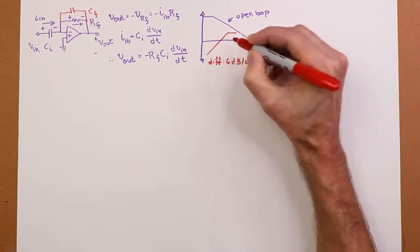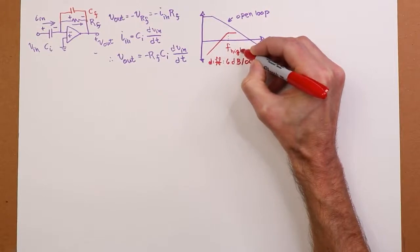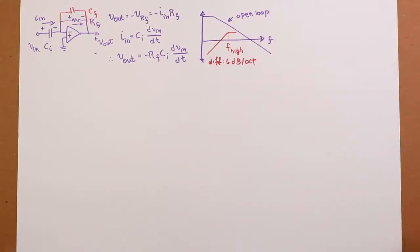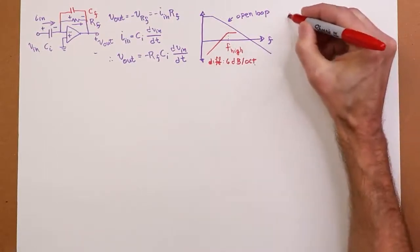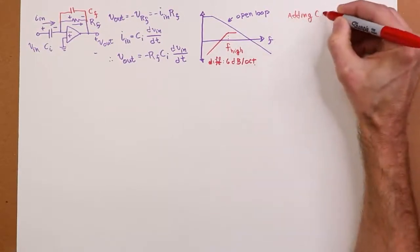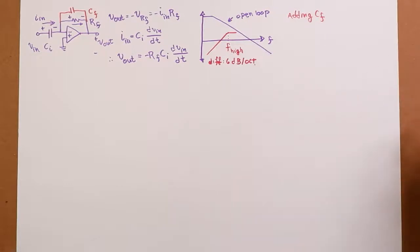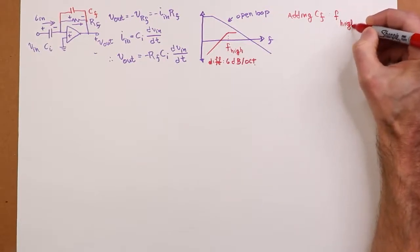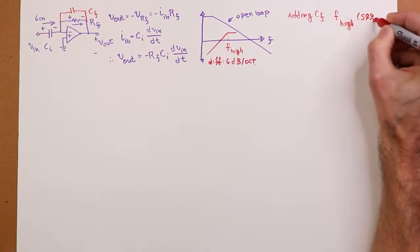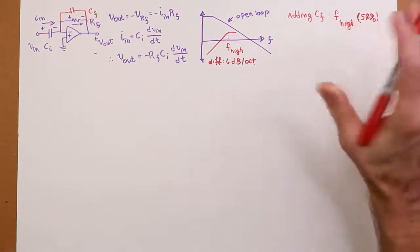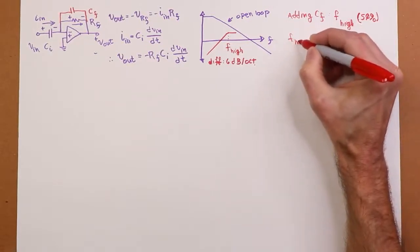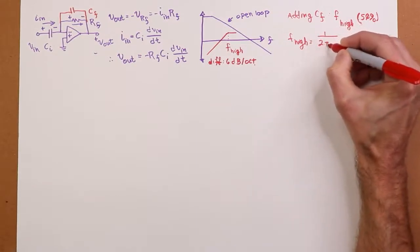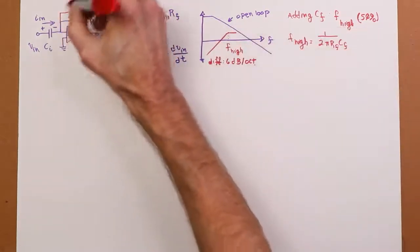So this is going to flatten out, and right here is F_high. That's the upper limit of differentiation. Differentiation occurs on the 6 dB per octave slope. So adding C_F limits the noise, makes the system more stable. It creates an F_high, which we can call our 50% accuracy point. F_high is equal to 1 over 2π R_F C_F. Just where is that critical?